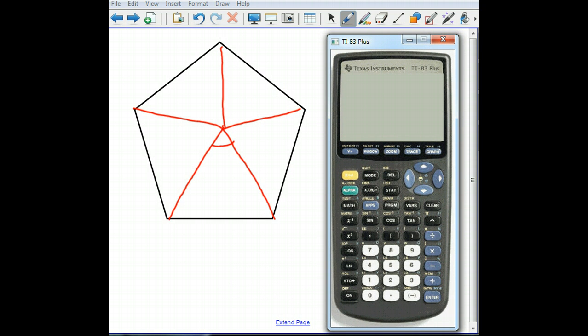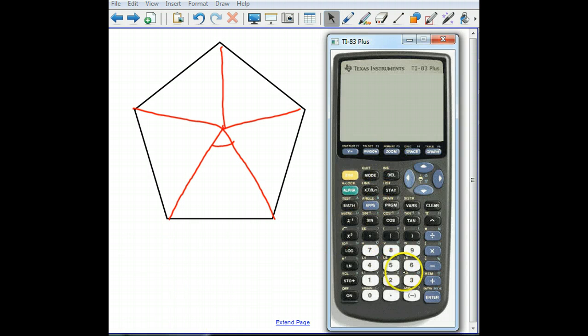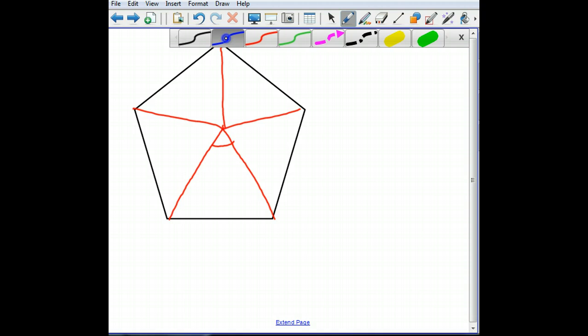So that means that 360 divided by 5 will be my vertex angle, 72 degrees. Okay, so this angle right here is 72 degrees, which means that my apothem right there we can't figure out using a special triangle.